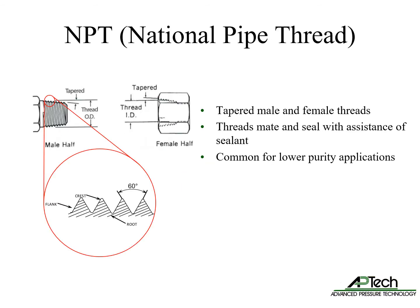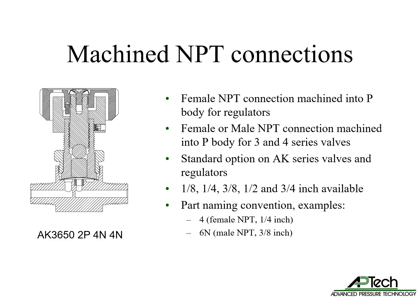NPT connections, or National Pipe Taper, feature tapered male and female threads. The threads mate and seal with the assistance of a sealant. NPT connections are very common for lower purity applications. The most common configuration for NPT connections are machined threads — either female for regulators, and female or male for 3 and 4 series valves.